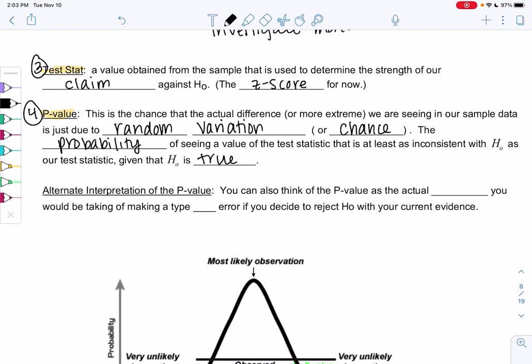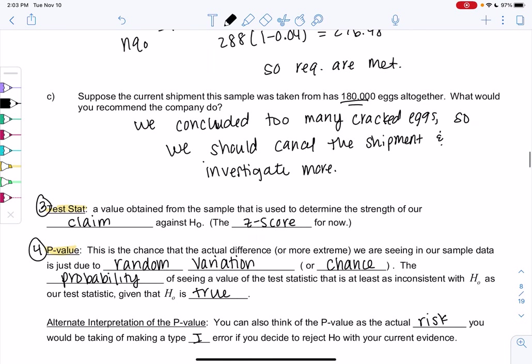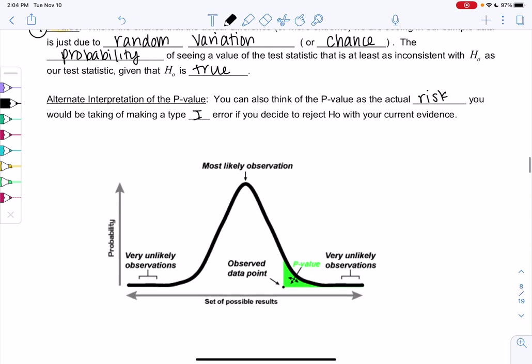Basically, what's the probability we would see this if H0 is true? In that last example, what's the chance this would happen if the eggs were actually only at 4%? The smaller that number is, the less likely. The alternative interpretation is where students understand it the most. You can think of the p-value as the actual risk you would be taking of making a type 1 error if you do reject with your current evidence. That last example is basically saying there's only a 0.22% risk. So little risk means we'll go ahead and reject. Visually, p-value is area under the curve. As those areas get smaller and smaller, it's less and less likely to happen just randomly.